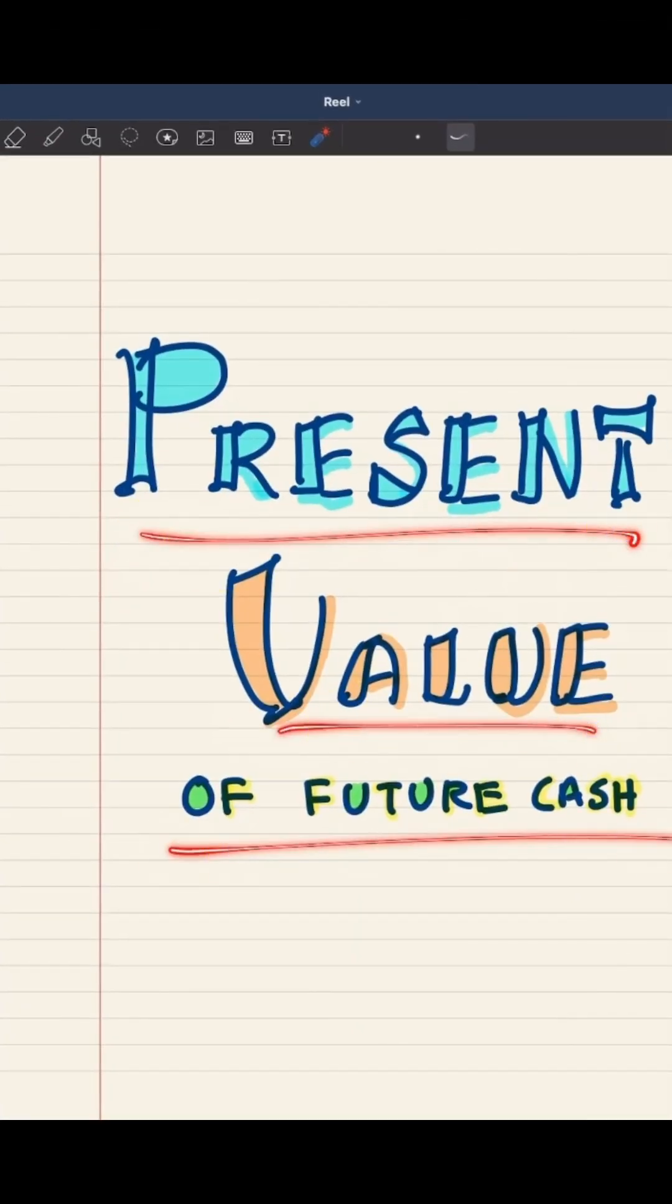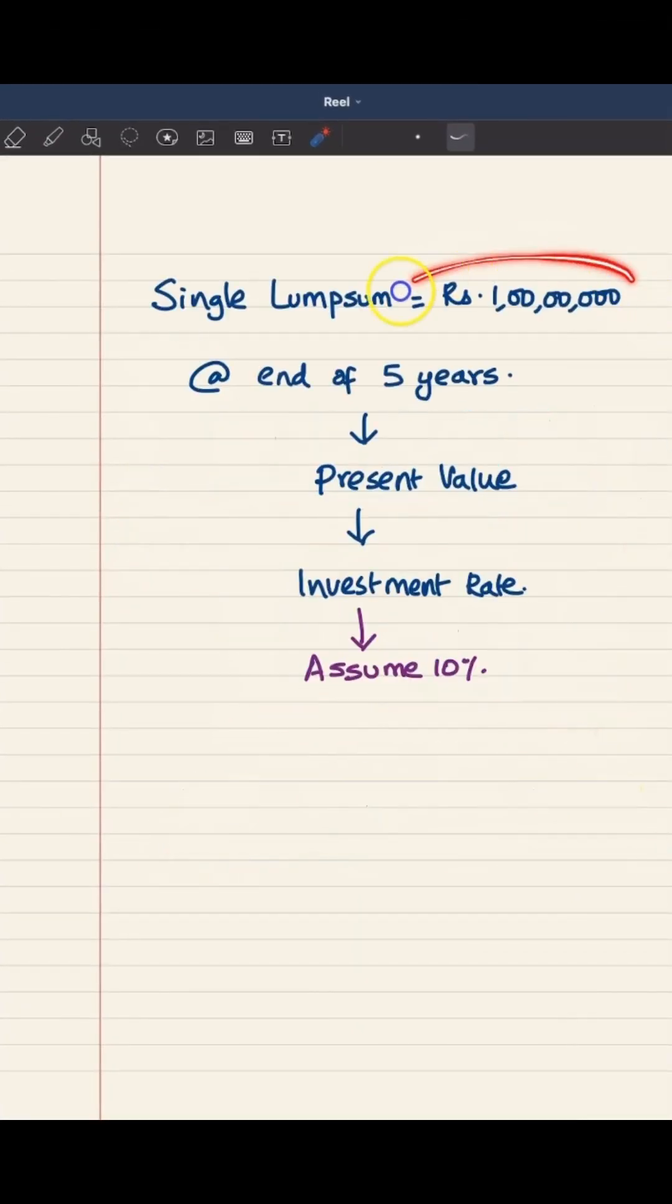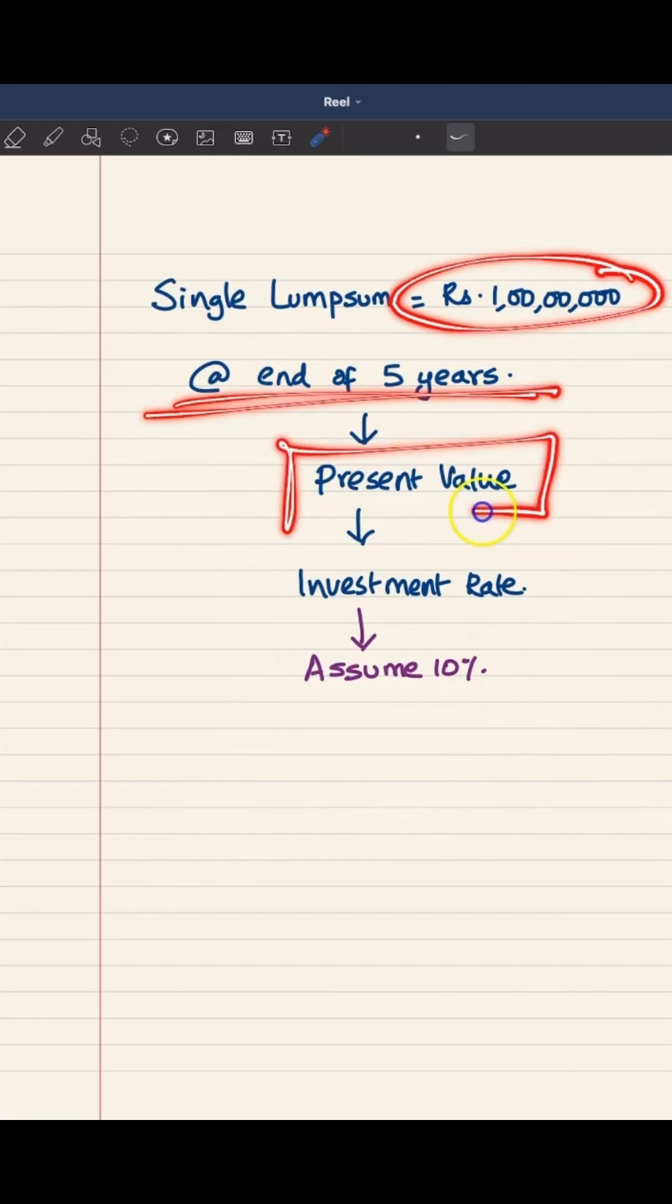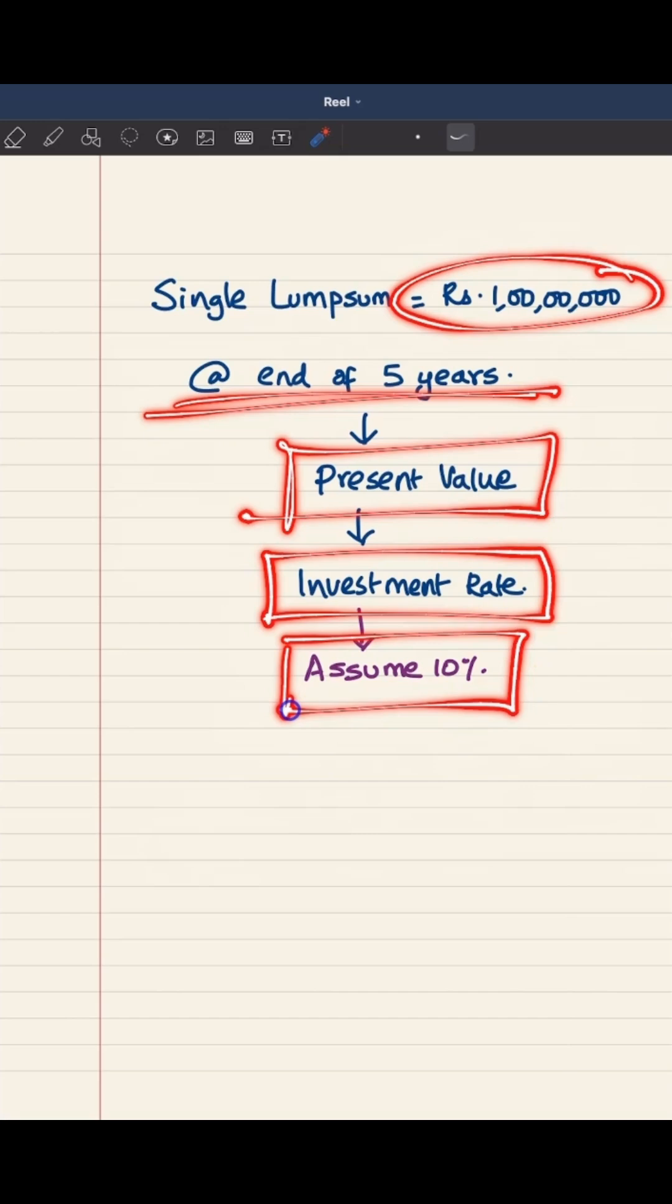Present value of future cash. So, look here: you are going to get 1 crore at the end of 5 years and you are interested in knowing what is its today's worth. If you want to find that out, you need one information—that is, at what rate you can invest the money you are going to have today.